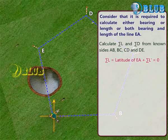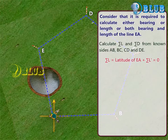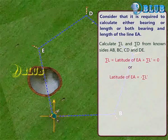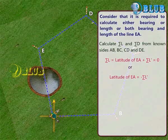Summation L is equal to latitude of EA plus summation L dash is equal to 0, or latitude of EA is equal to minus summation L dash.